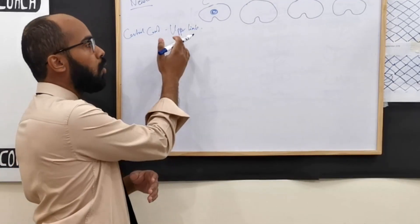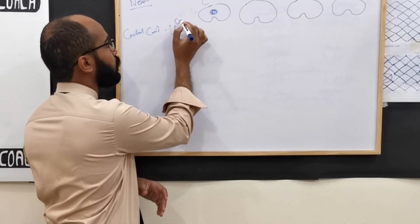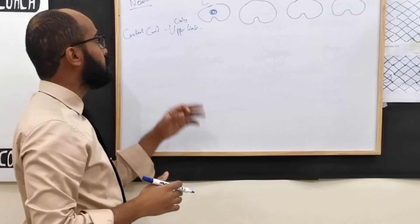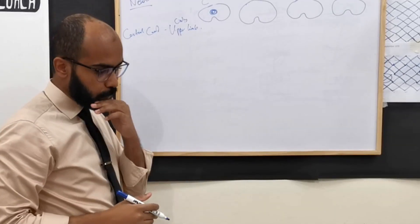As soon as you hear only upper limb, or upper limb much more than lower limb, you want to think about central cord.